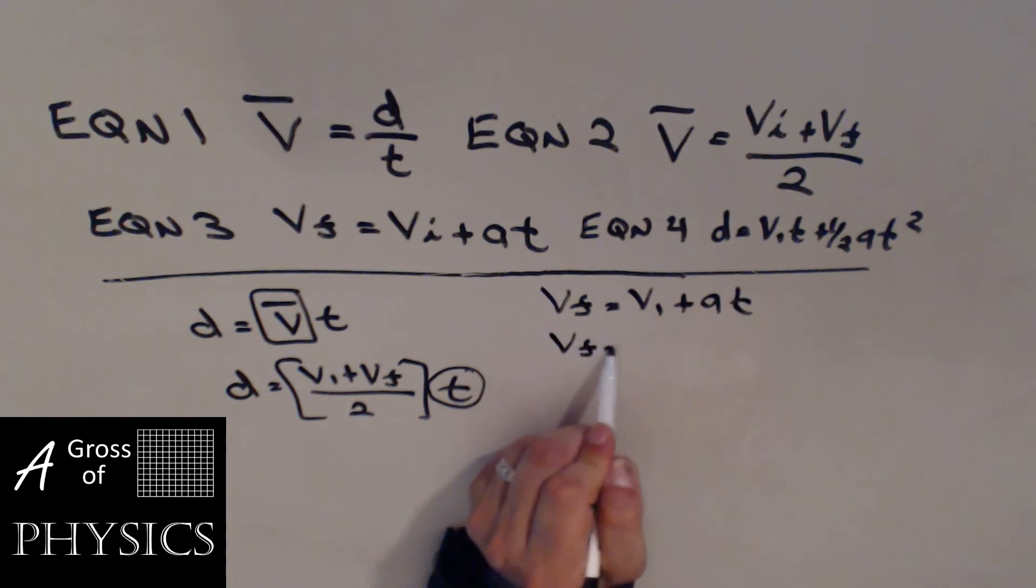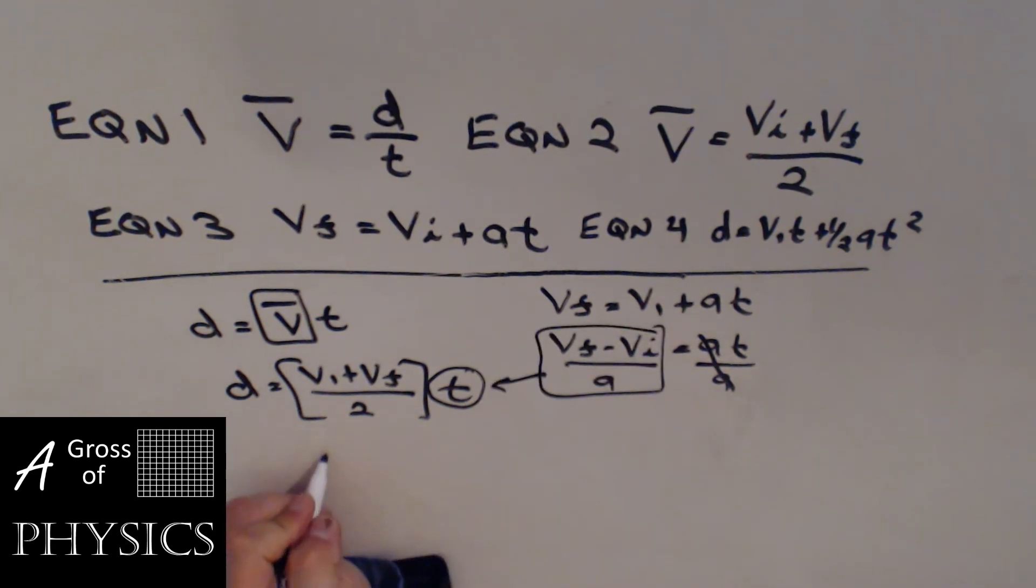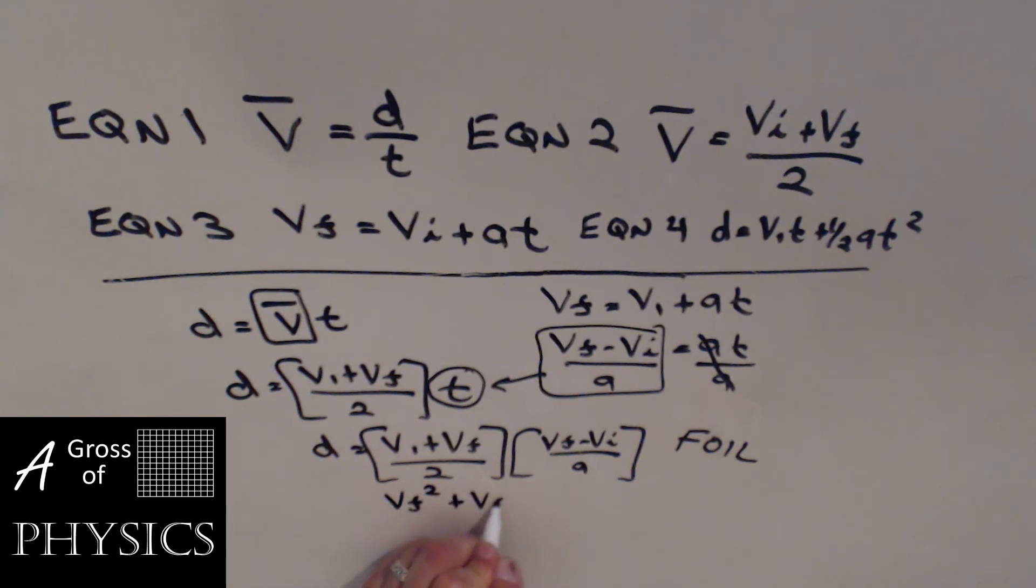Substitute this in for T. We have D equals VI plus VF over 2, all multiplied by VF minus VI over A. At this point, we need to FOIL. We're going to take these two and do first, outside, inside, and last. The 2A is going to multiply on the bottom. You'll end up with VF squared plus VF VI minus VF VI minus VI squared all over 2A. These terms subtract.